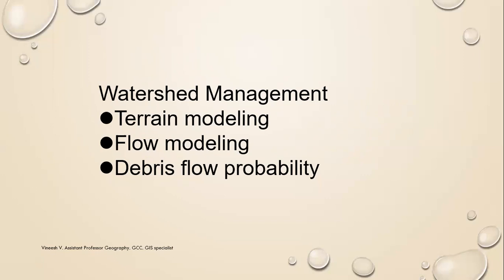For watershed management, the major things are terrain modeling, flow modeling, and debris flow probability. In GIS, watershed management is very important in geography, geology, and geosciences. There are many steps to delineate a watershed and properly manage it — extracting the maximum potential from the watershed is very important for managing resources. The whole world is full of watersheds. Mismanagement of water is the main problem we face today, mainly because of mismanagement of watershed, stream, and adjoining places.